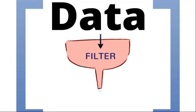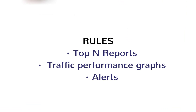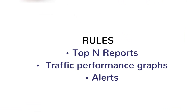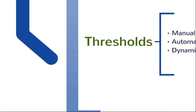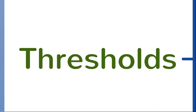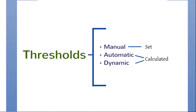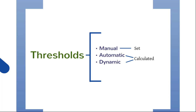Sci-on uses filters. Once a filter has been set up, you will be able to create different rules in order to receive data for specific traffic monitoring requirements, such as top-end reports, detailed traffic performance graphs, and alerts triggered based on specific traffic passing over thresholds. These thresholds could be manually, automatically, or dynamically calculated.